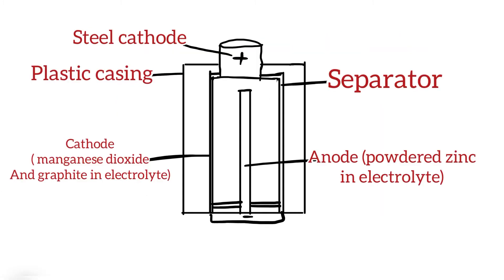As you can see in this diagram, an alkaline battery structure contains zinc as the anode electrode and manganese dioxide with graphite as the cathode electrode, with potassium hydroxide as the electrolyte. A separator is placed between the two electrodes, which prevents them from reacting with each other spontaneously. This type of battery only generates 1.5 volts and cannot produce more than that.